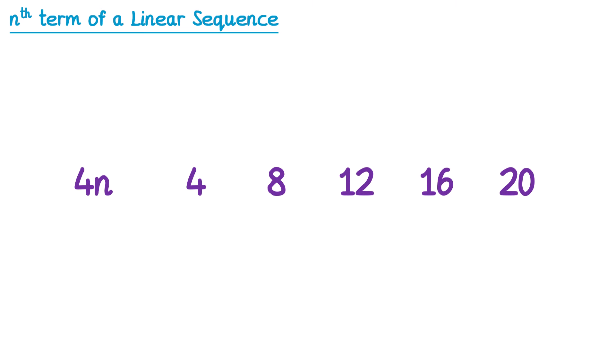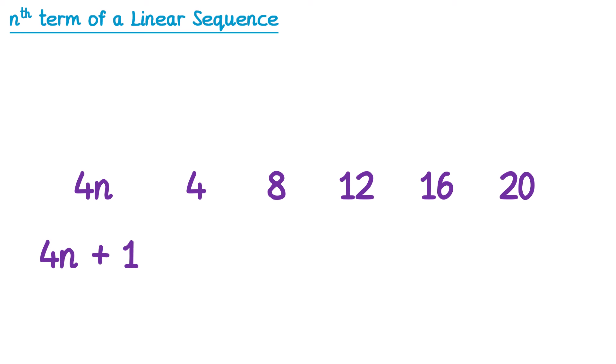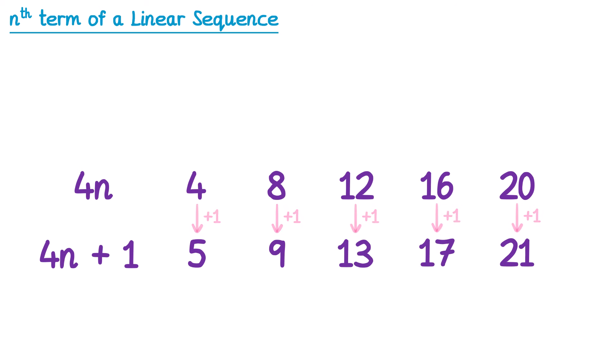Let's take the sequence 4n and use it to generate some other sequences. If we were to do 4n plus 1, we would first generate 4n and then add 1. So to get this sequence, we just add 1 to all of the numbers in the 4n sequence. To get the first term, we add 1 to 4, which is 5. To get the second term, we add 1 to 8, which is 9. And to continue the sequence, we just keep adding 1 to all of the terms.